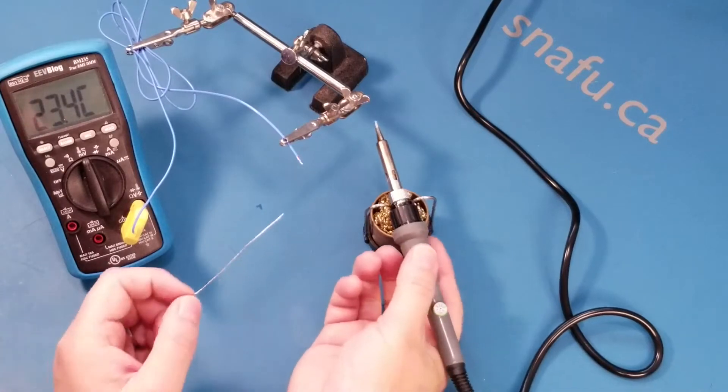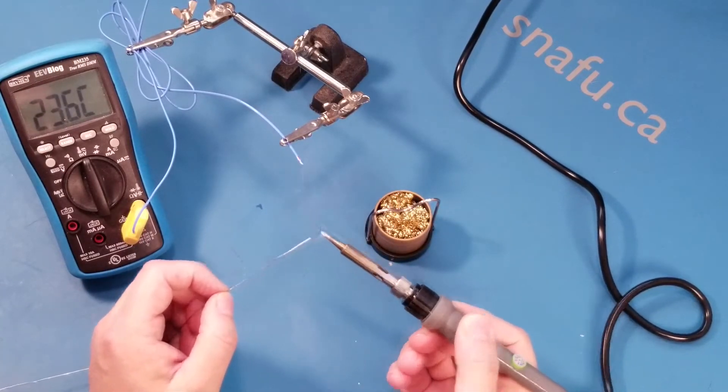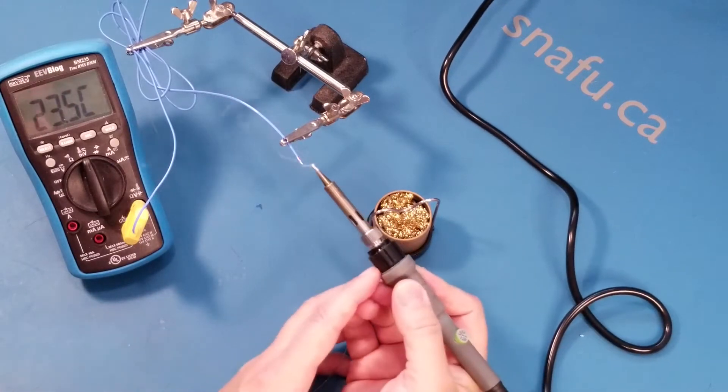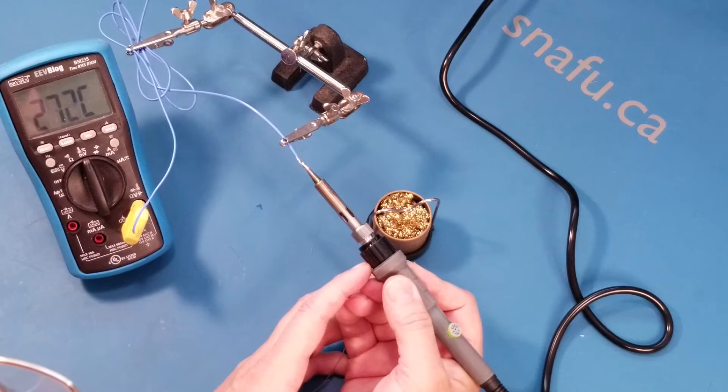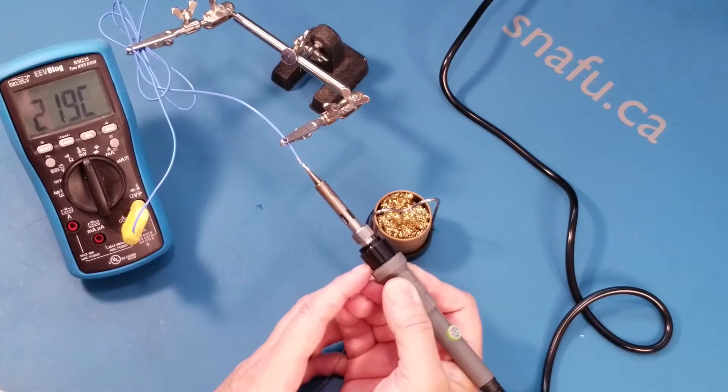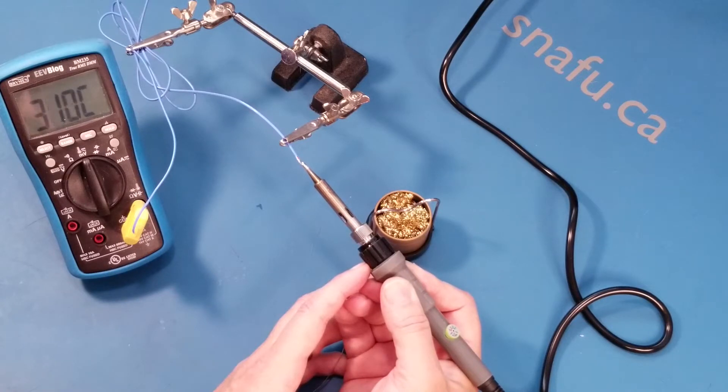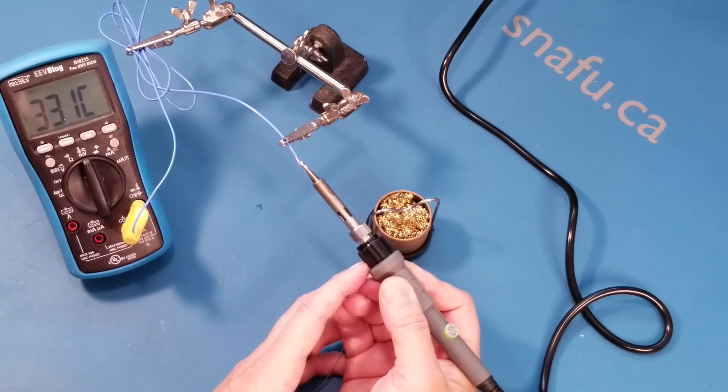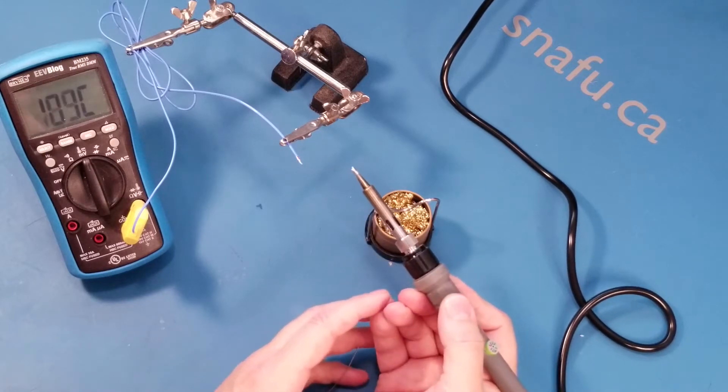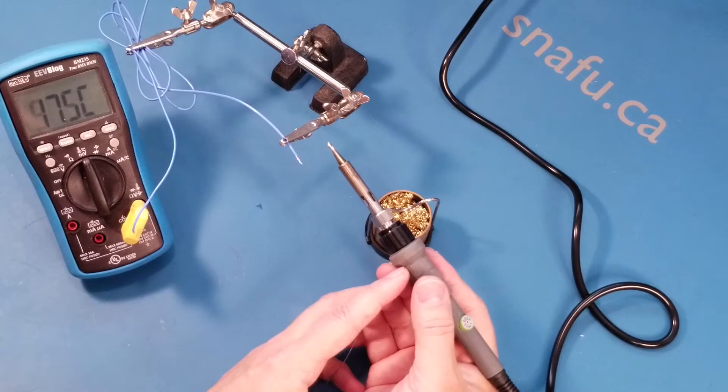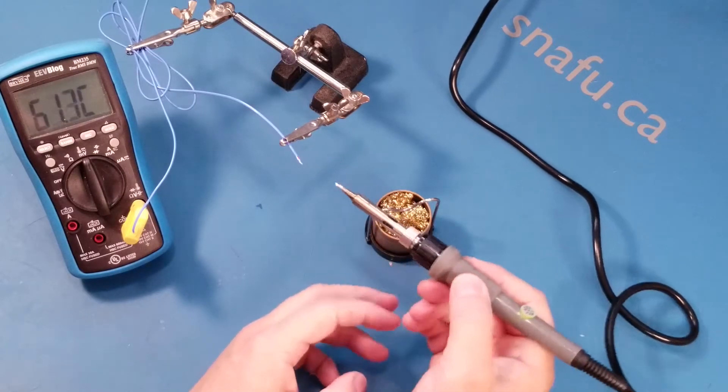For the first test, we're going to tin up the end of the bit, and we'll see how accurate the temperature setting is. I have it set to pretty much exactly 350. We touch it on the end of this thermocouple. Hard to hold it right there. And we're getting about 315, maybe a little bit more. Seems to be jumping around a little bit. That's probably good enough for home electronics work. We're up to 330. Within about 20 degrees, that should do. This isn't a high-end $200 station. This is a $13 iron.